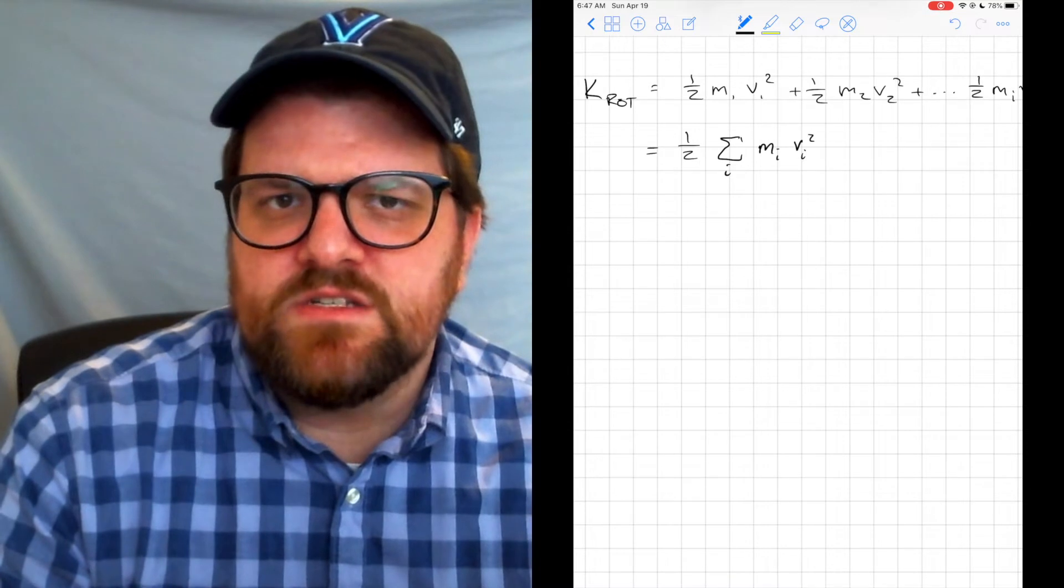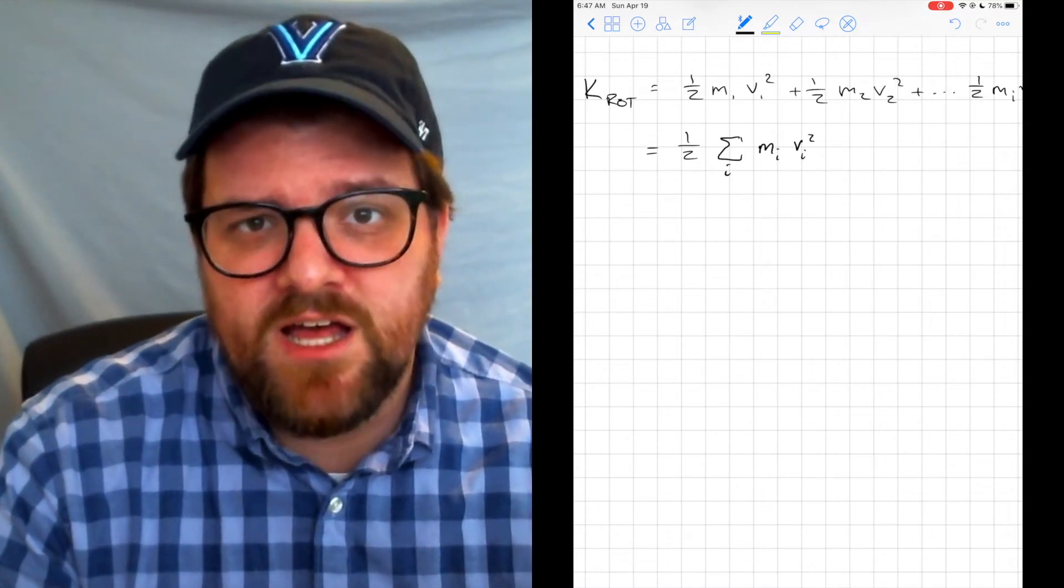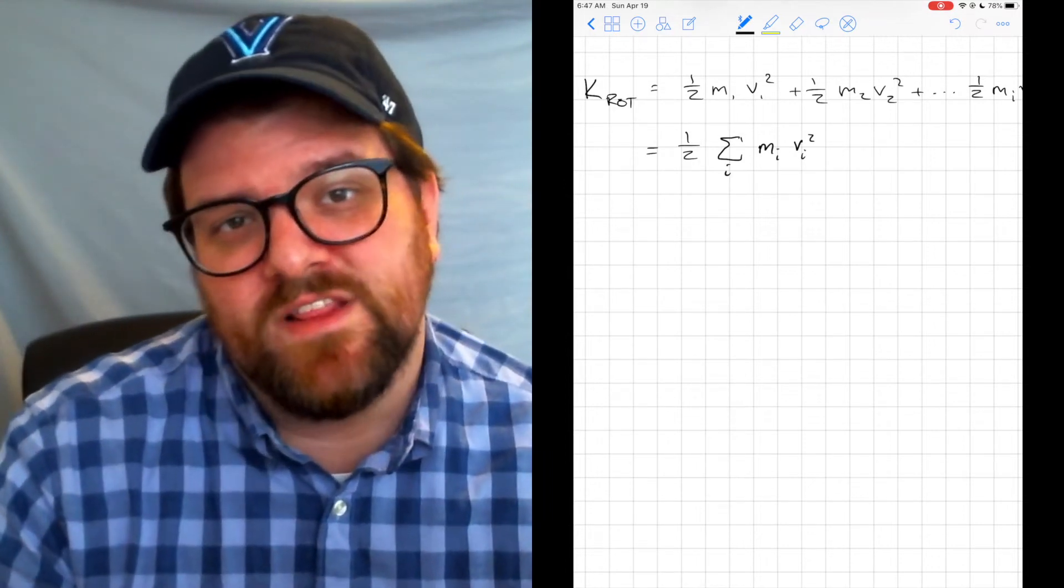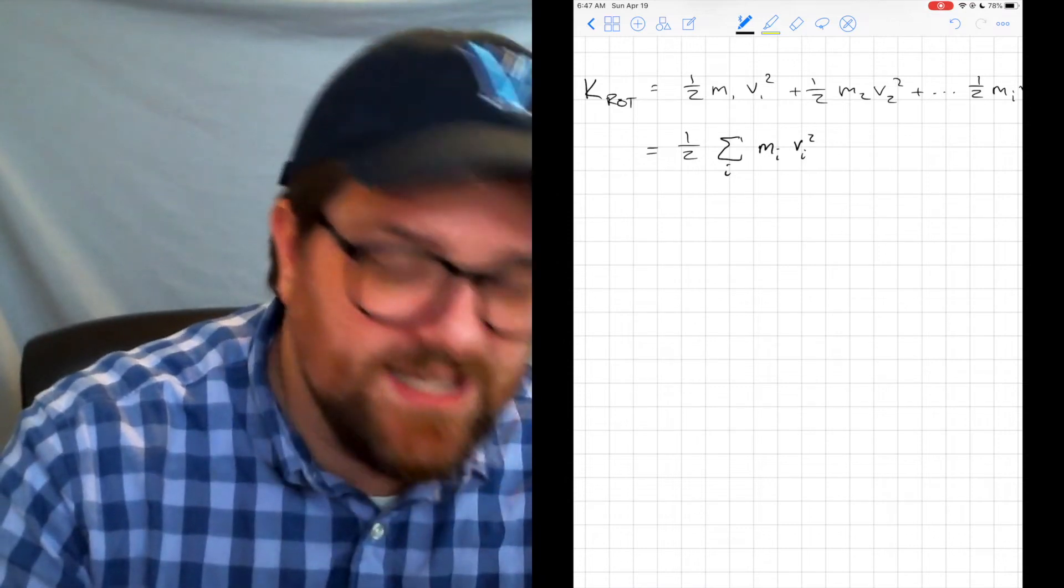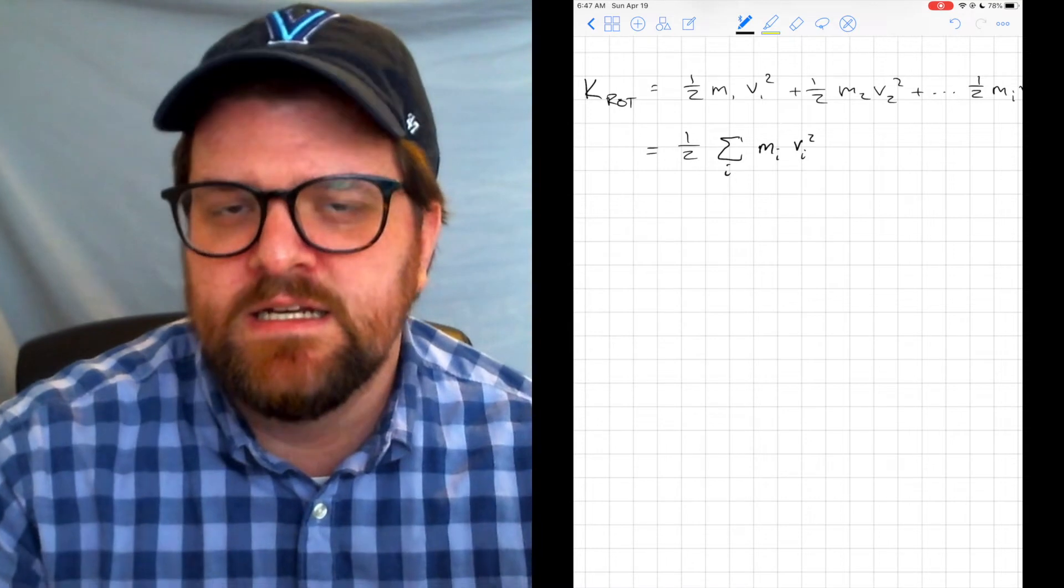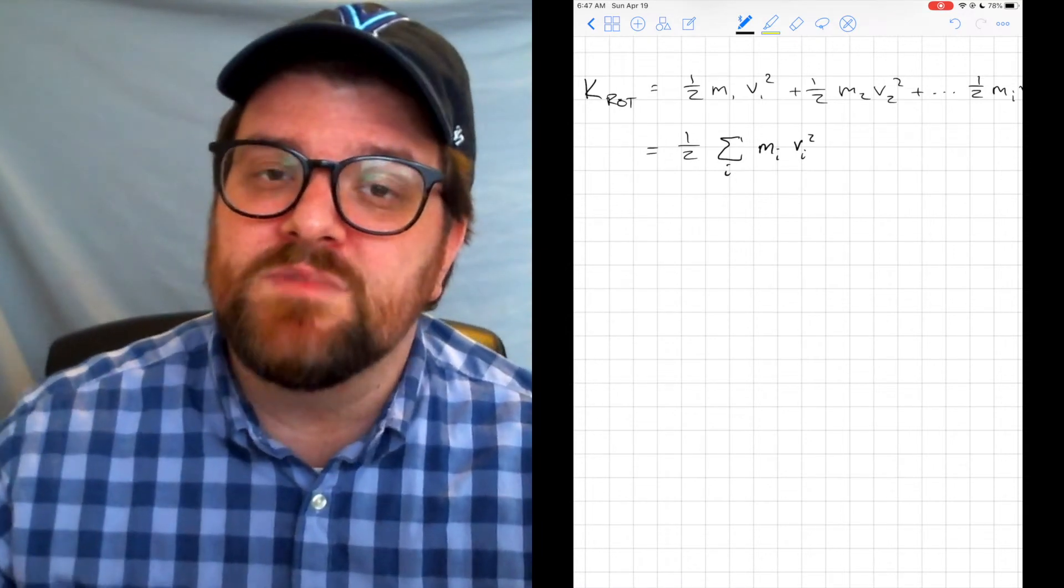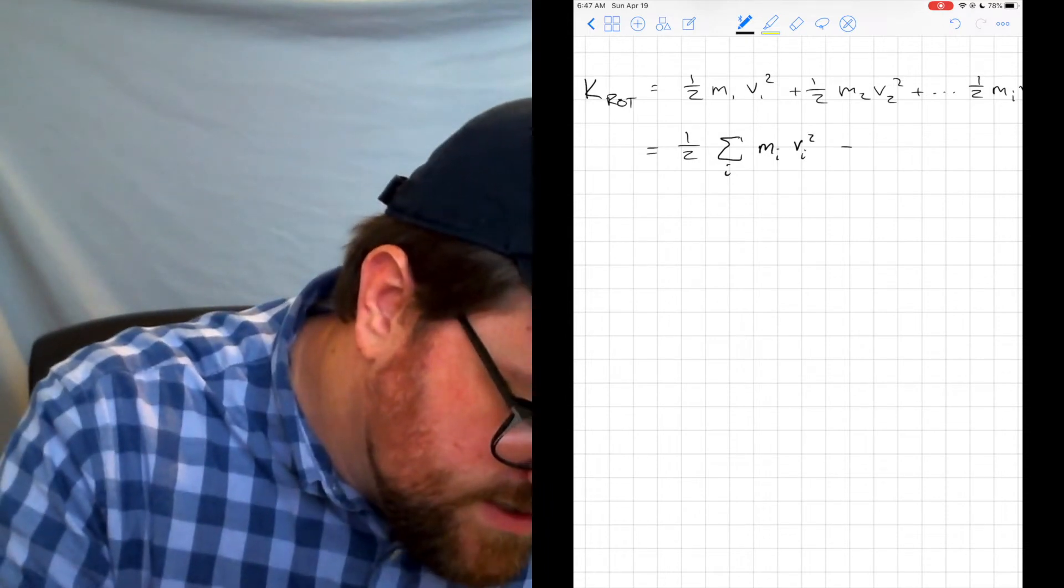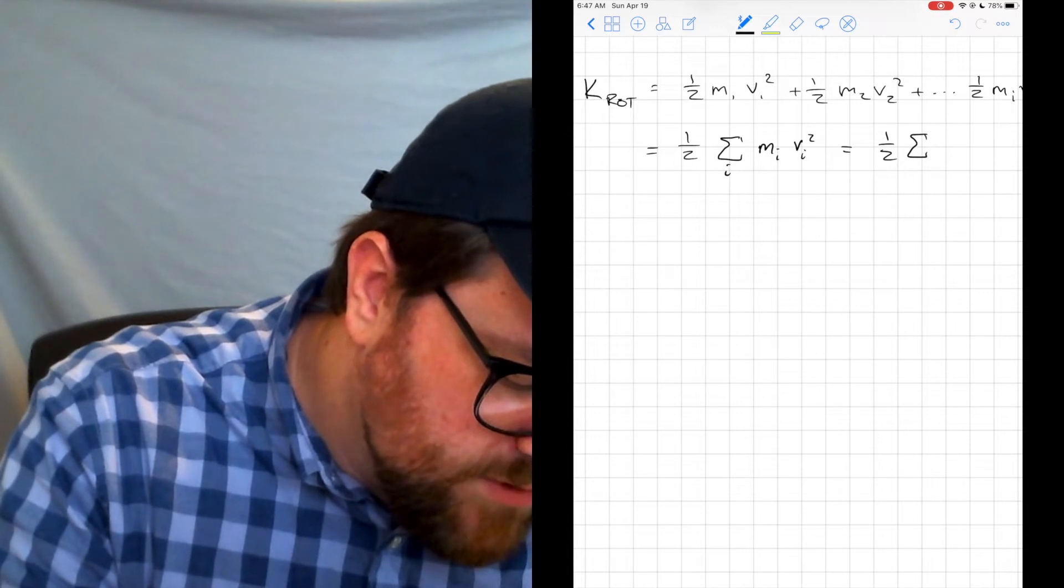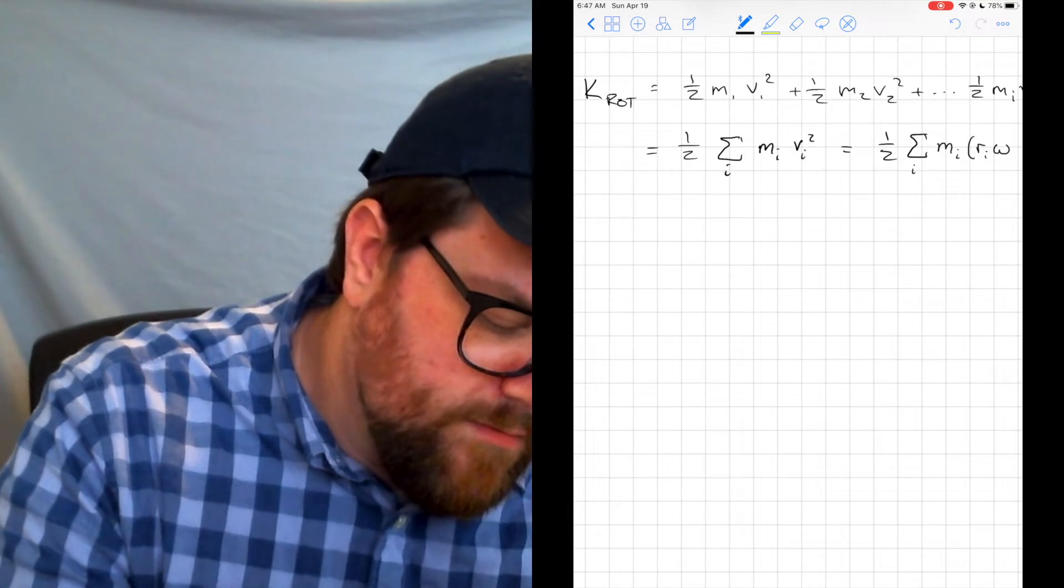Now, V is this tangential velocity. So I can turn that tangential velocity into an angular velocity by saying that tangential velocity is equal to R times omega. So maybe let's change this. Let's say 1/2 and we sum over i of mᵢ times Rᵢω.